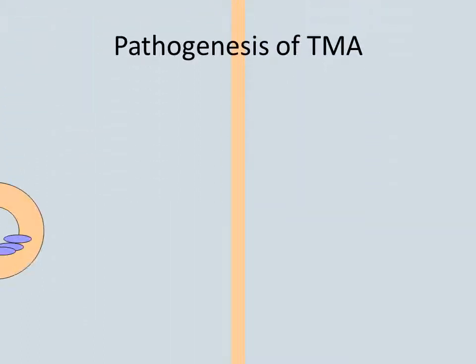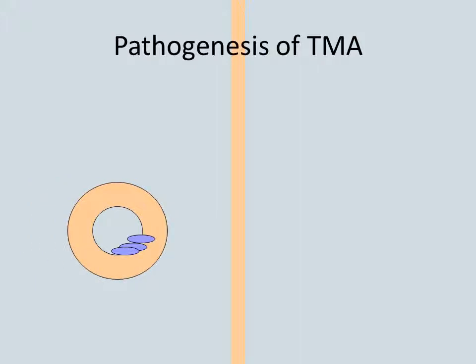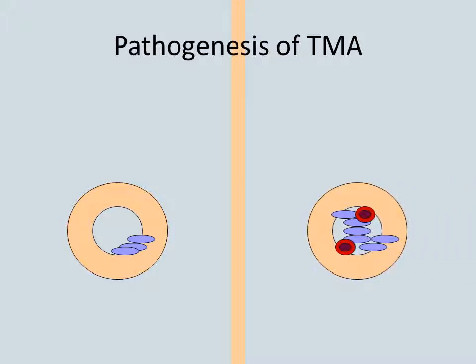All TMAs begin with platelet activation and clumping in capillary beds to form a web across these tiny blood vessels. Red blood cells get damaged by these platelet meshes, and organ function may be compromised by ischemia.